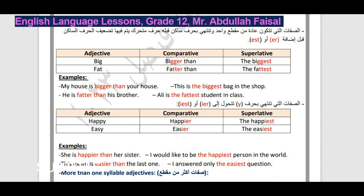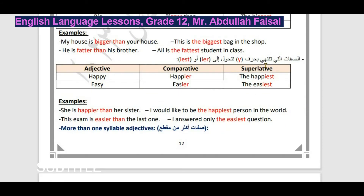أيضاً إذا كانت الصفة تنتهي بحرف Y - تتحول Y إلى I ونضيف ER للمقارنة بين اثنين، أو نضيف EST للتفضيل المطلق. مثلاً: happy → happier, the happiest. وكذلك: easy → easier, the easiest. هذا مهم في الاختبارات الوزارية في إكمال الفراغات.